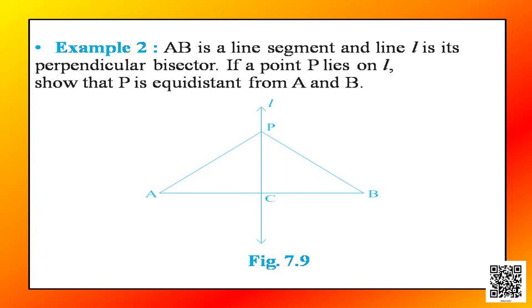The question says AB is a line segment and line L is its perpendicular bisector. What does it mean by perpendicular bisector? Perpendicular bisector is a line which bisects another line at a right angle — that means the line is perpendicular to another line and bisects it. Let us draw it.